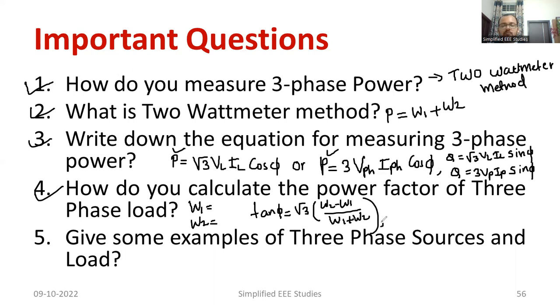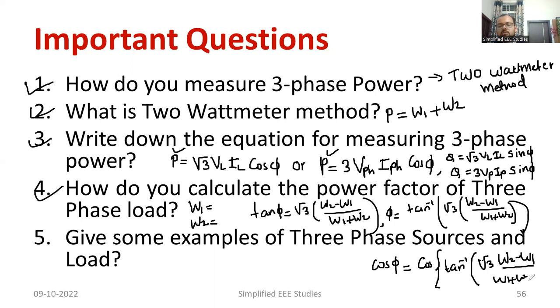From this, you need to calculate phi. Phi is equal to tan inverse of root 3 into w2 minus w1 by w1 plus w2. From this, you can directly take the cos phi, that is nothing but cosine of tan inverse root 3 into w2 minus w1 divided by w1 plus w2. Like this, you can write.